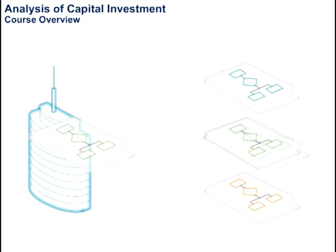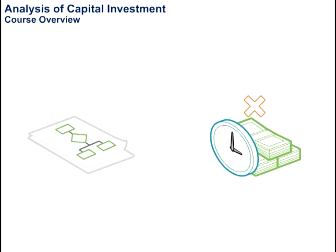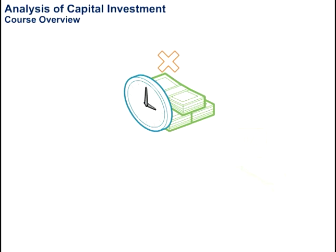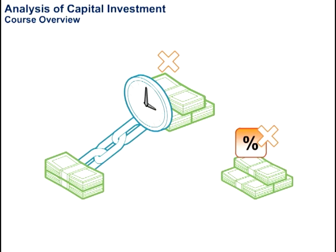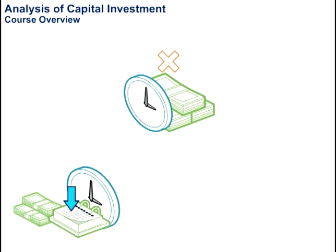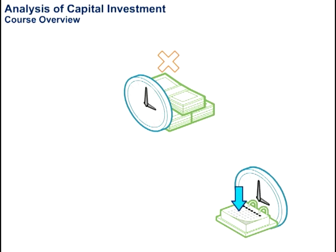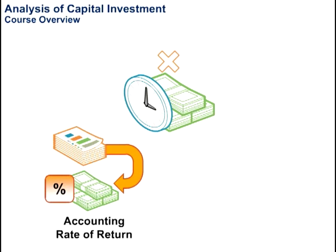Here, we will look at two classes of techniques. One class includes techniques that do not consider time value of money. This means that the techniques do not consider the interest charge associated when you tie up the money and the fact that different cash flows are happening at different points in time. The two techniques under this class that we will discuss are accounting rate of return and payback.